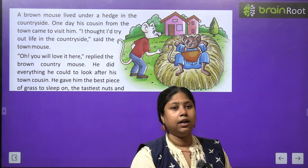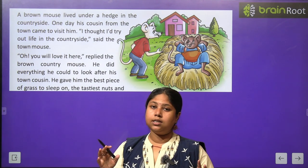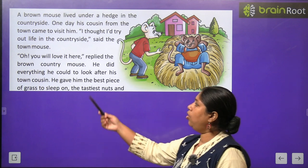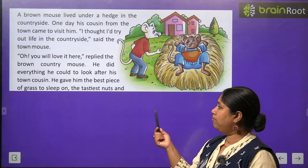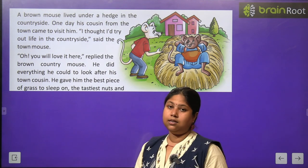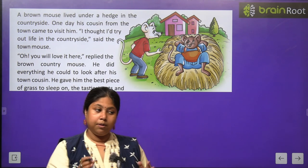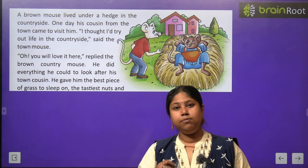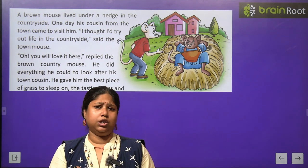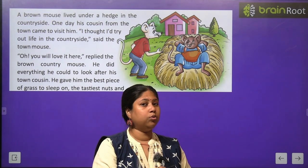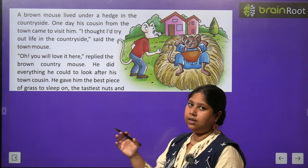Town mouse ne kaha ki main souch raha hun ki kuch time gaon mein bita ke gaon ka jeevan dekhun. 'Oh, you will love it here,' replied the brown country mouse. He did everything he could to look after his town cousin — he gave him the best piece of grass to sleep on and the tastiest nuts to eat. Ye joh brown country mouse tha, isne poori koshish ki ki apne town wale cousin mouse ko koi bhi problem na ho. Usne achche se achcha khana, achcha bichhona, sab kuch apne cousin ko diya.